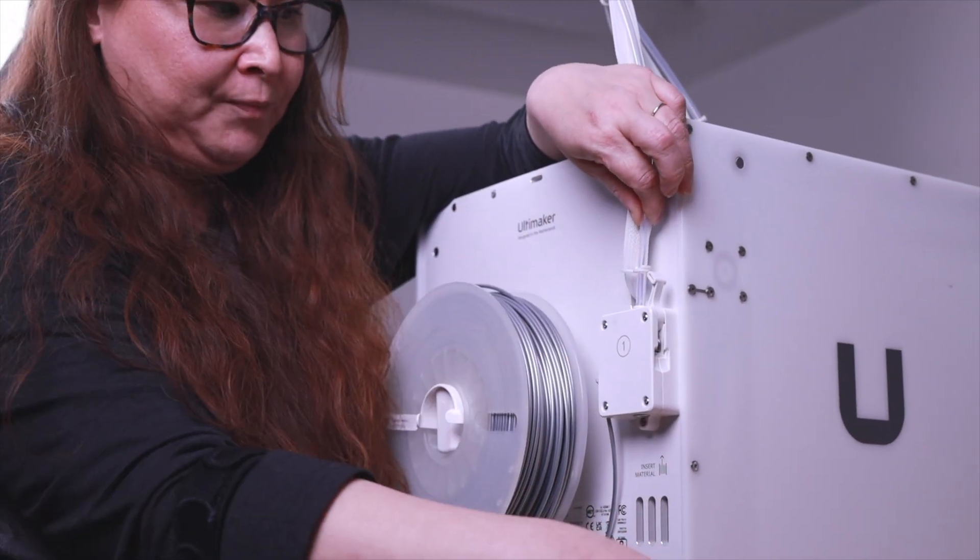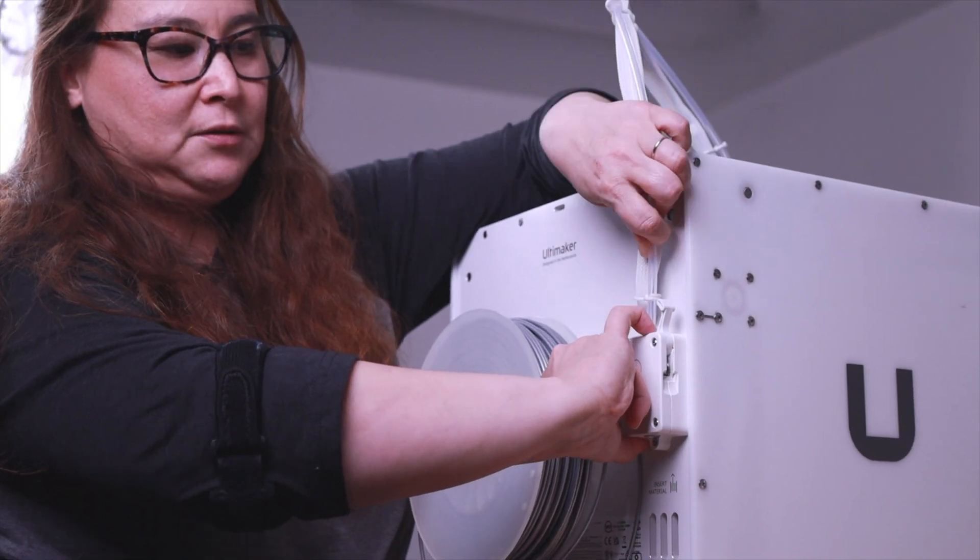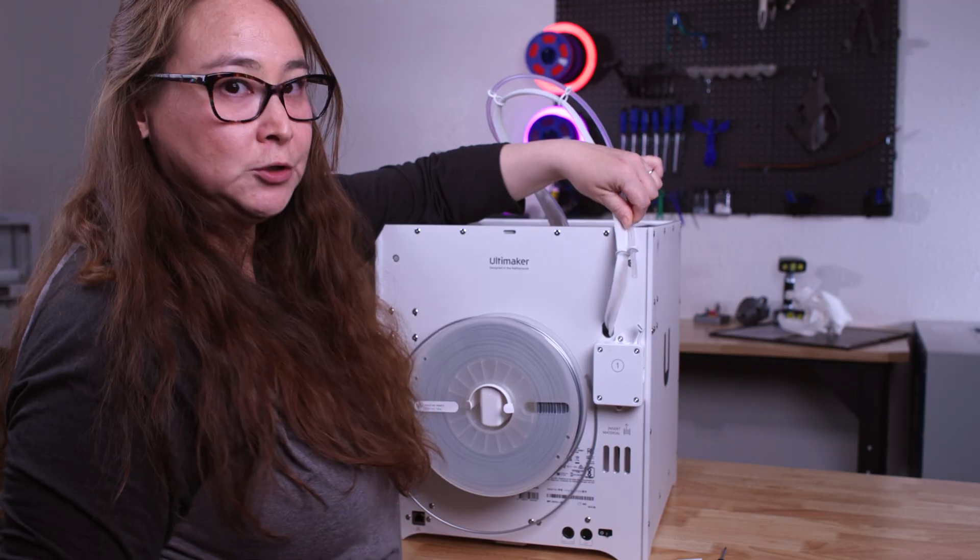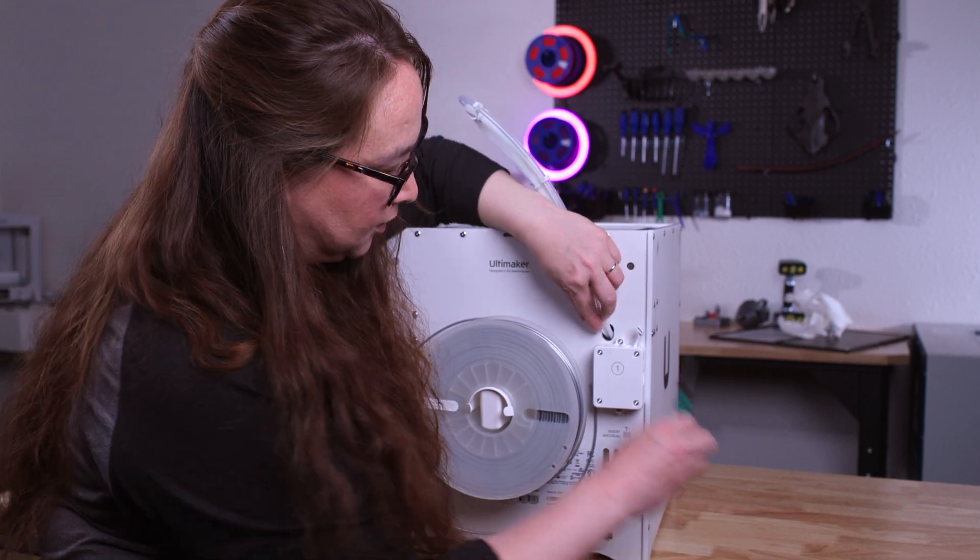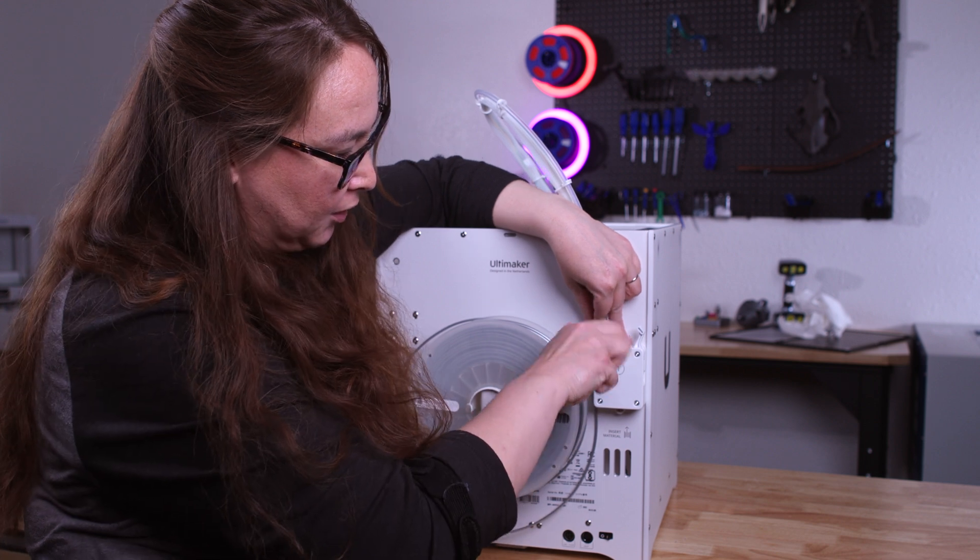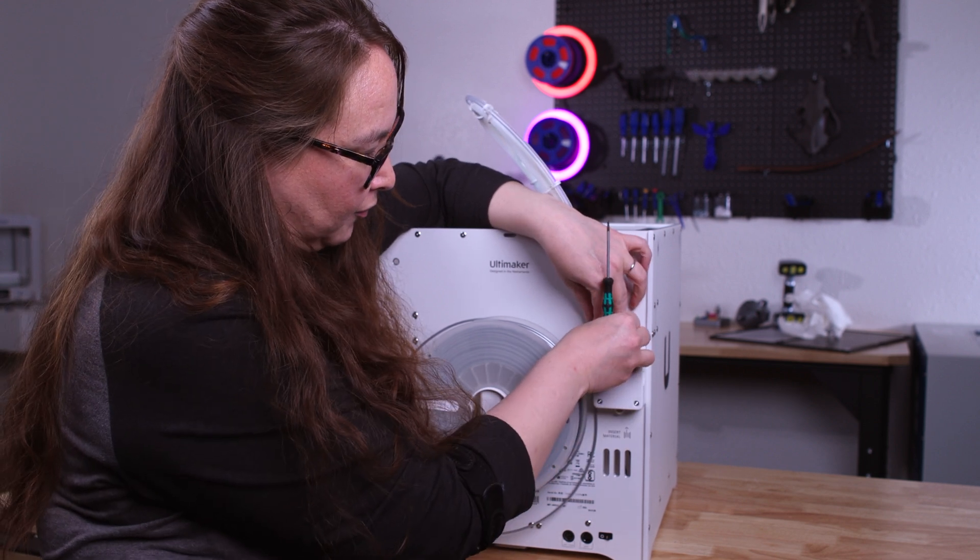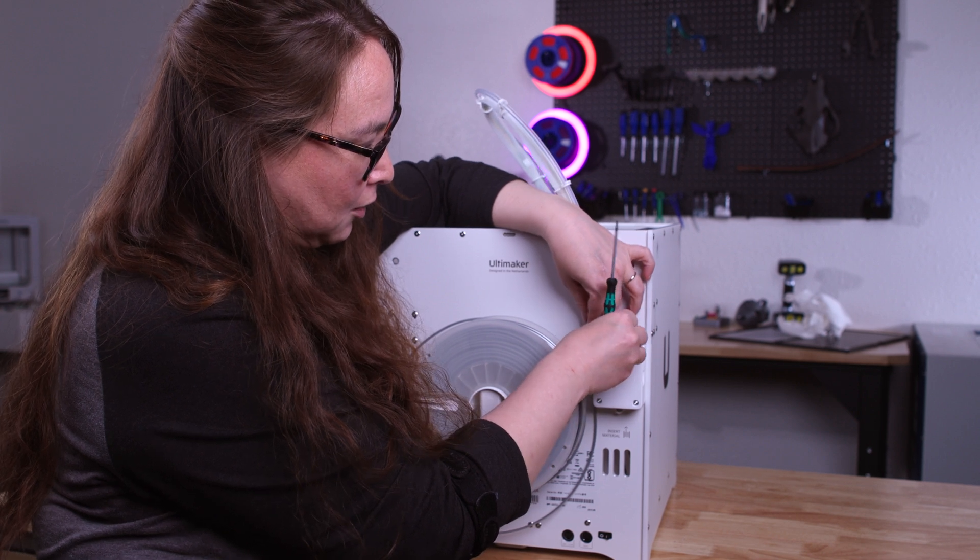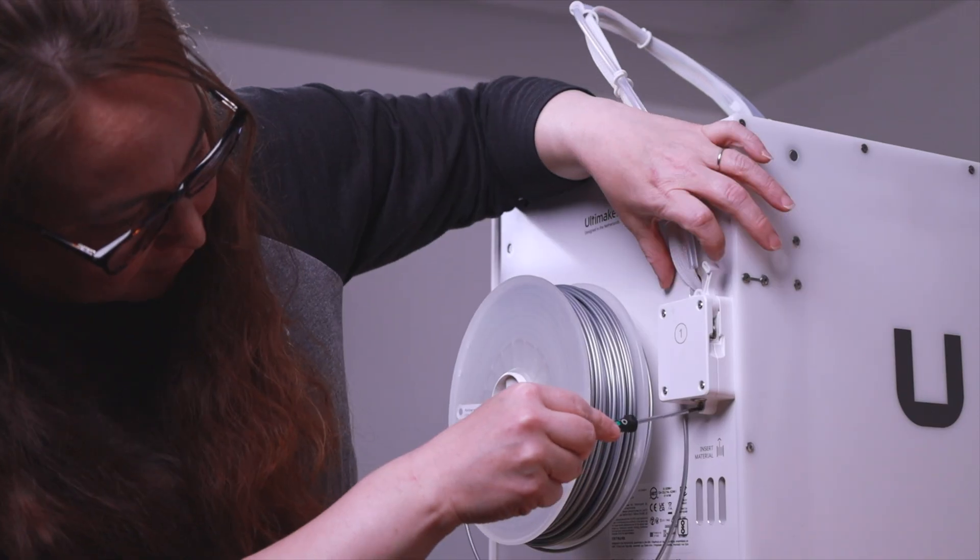You're going to push down on this little coupling and your Bowden tube should be able to pop right out. Next you're going to unscrew these two screws. These two screws are what keeps your feeder attached to your Ultimaker, so we can take this right off and we can take this whole feeder and hold it in our hands and make it easier to work on.